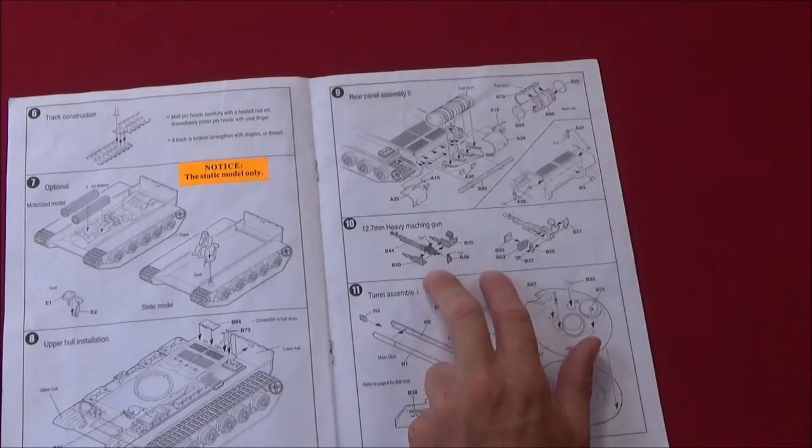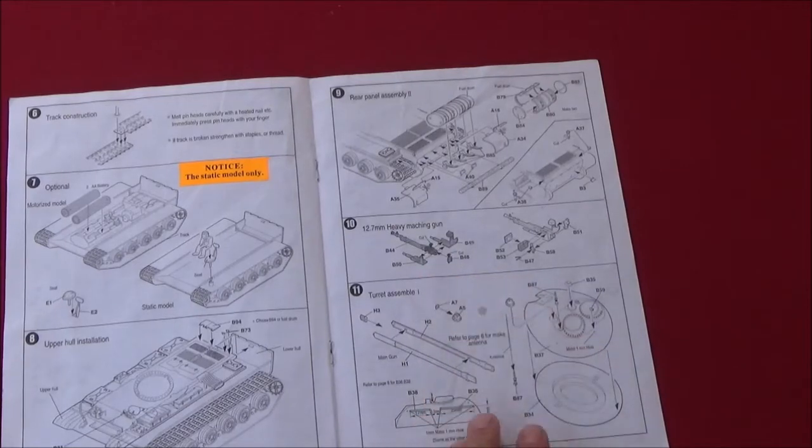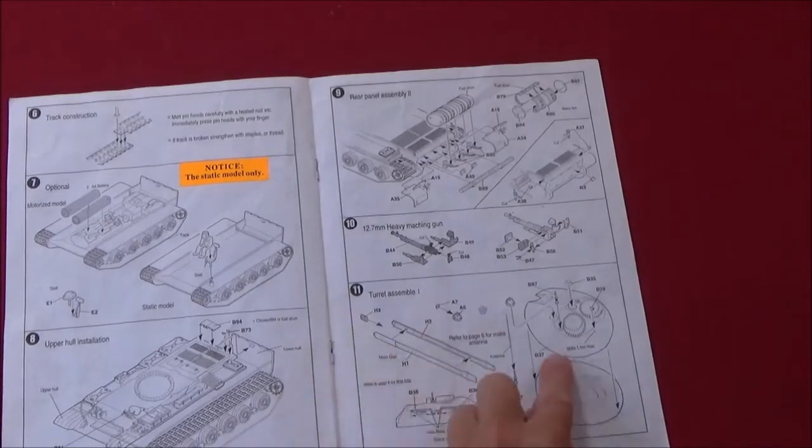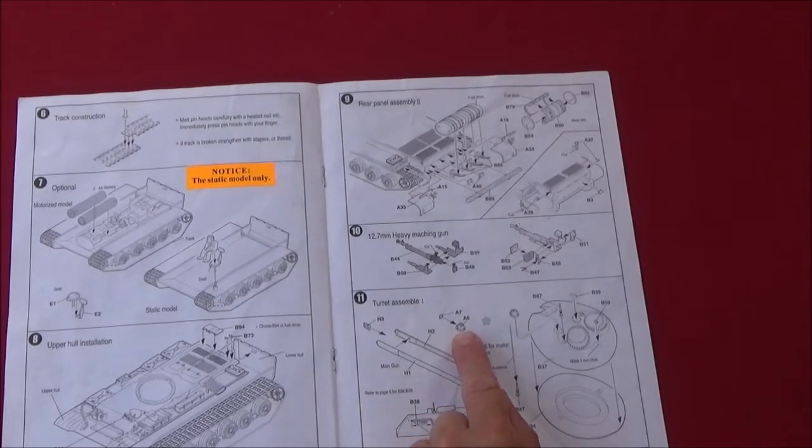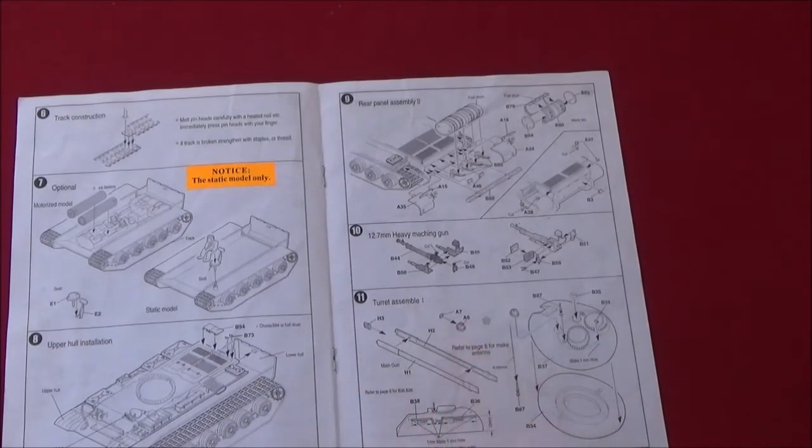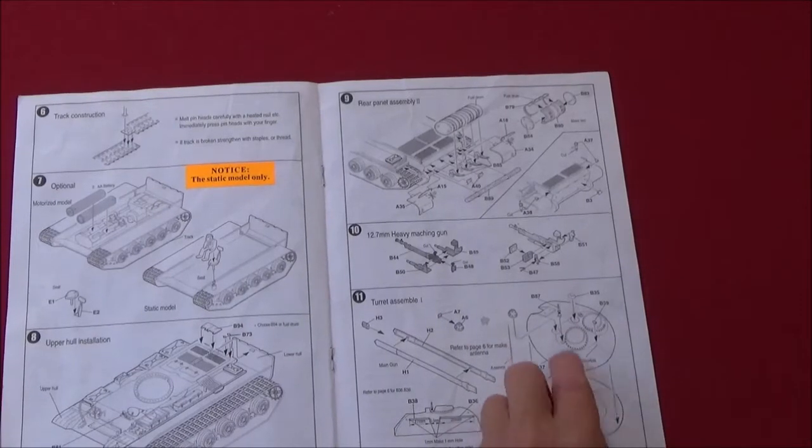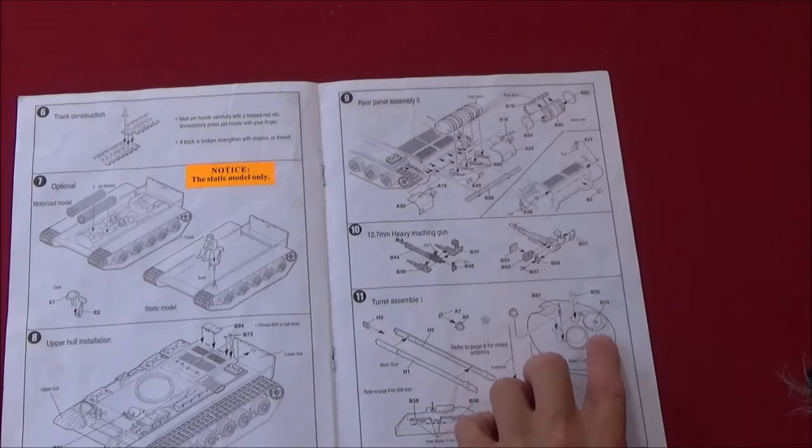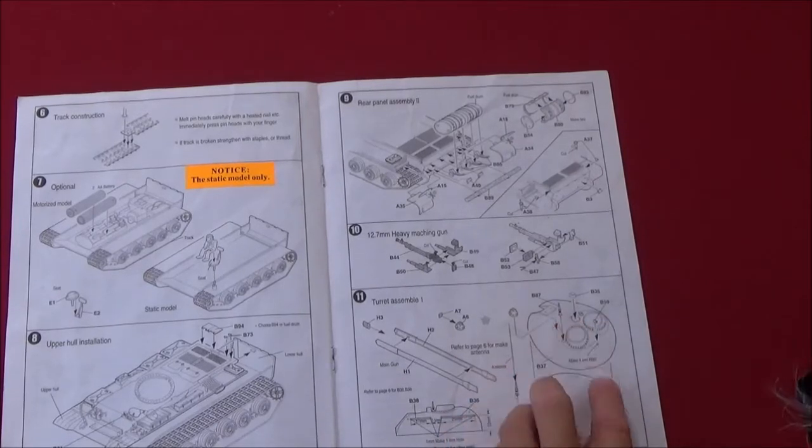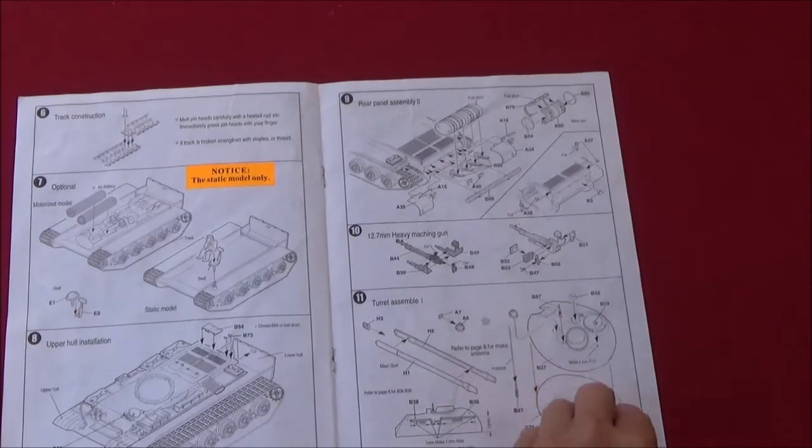And you got the 12.7mm machine gun. And then here we're starting with the turret. You got the main gun and one of the sights, and some of the turret detail here, which is not a lot really, just a couple parts here. Antenna and stuff. Put the turret together.